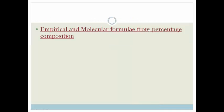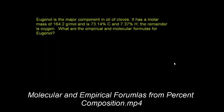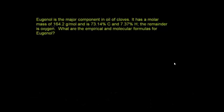Let's watch this very good video from Sal. Eugenol is a major component in oil of cloves. It has a molar mass of 164.2 grams per mole and is 73.14% carbon and 7.37% hydrogen. The remainder is oxygen. What are the empirical and molecular formulas for Eugenol?